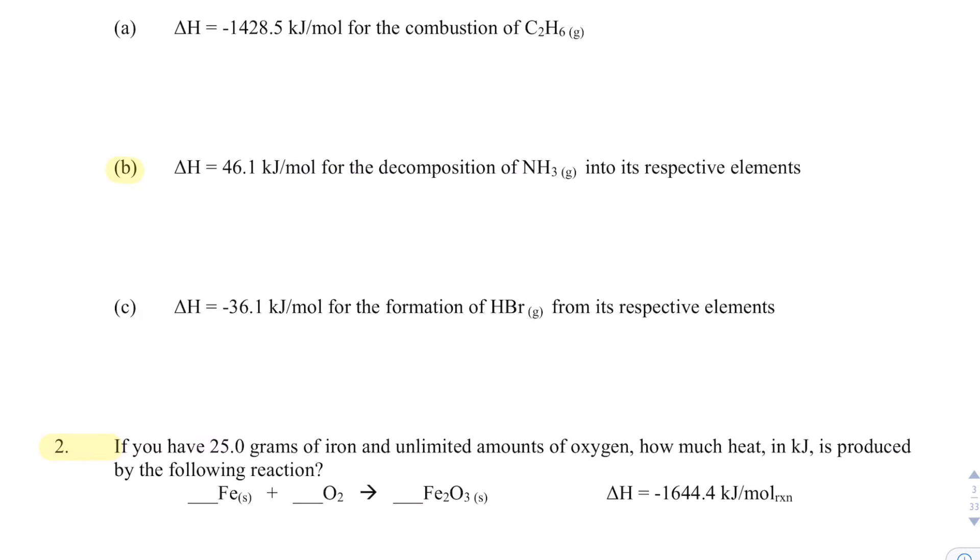If I have the decomposition of ammonia into its elements, that'll be 2 NH3 just breaking apart into N2 plus 3 H2, those diatomic elements. For this decomposition reaction to occur, I've got to absorb some heat, so that'll be plus 46.1 kilojoules per mole of reaction.